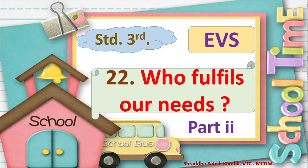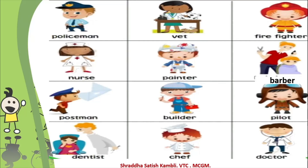It was a very interesting lesson last time where we talked about various occupations. We discussed all these people who help us in our day-to-day life. There was the policeman, a nurse, postman, dentist, the vet or the animal doctor, then the painter, builder, chef, firefighters who help us in case of a fire breaking out, the barber who cuts hair, pilots who fly planes, and doctors who take care of us when we are sick. These are all the different types of people who help us — they are our helpers, and we also call them as people in different occupations.